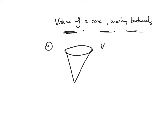Let's start with example one. The volume of the cone is 250 cubic centimetres, the height of the cone is 10 centimetres, and the question is requiring me to find the radius of the cone.